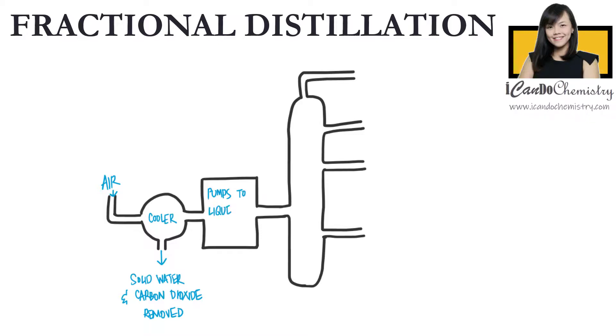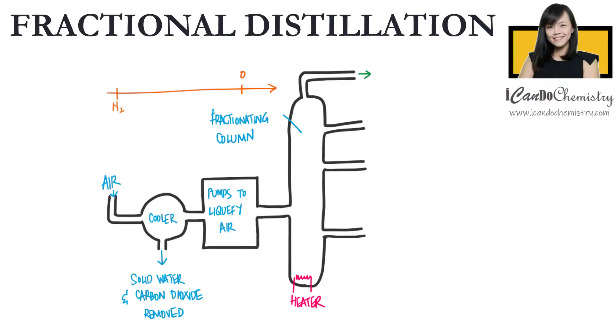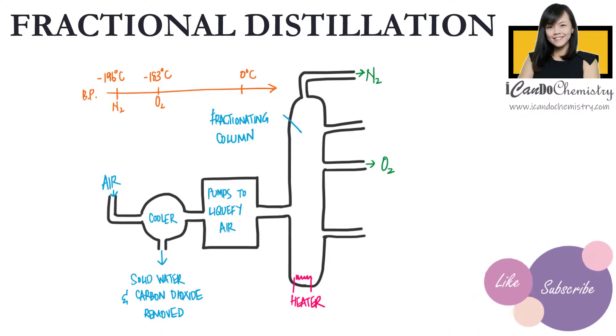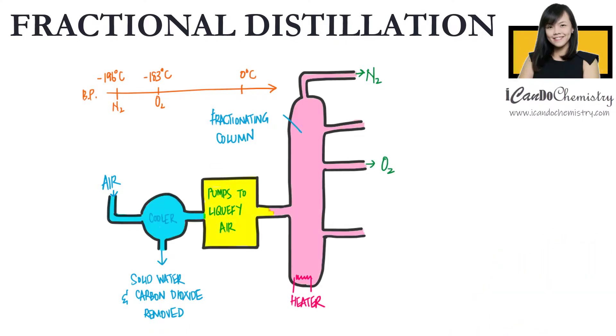Liquid air is then distilled by allowing liquid to warm up. Nitrogen has a lower boiling point of negative 196 degrees Celsius, so it will distill first. Oxygen, which has a higher boiling point of negative 183 degrees Celsius, will be distilled next.